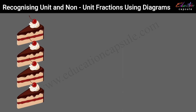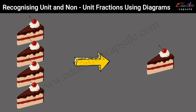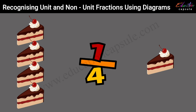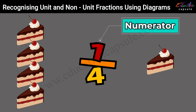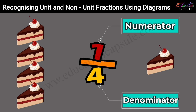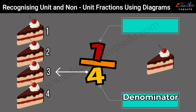For example, out of four pieces of a cake you get one piece. So the fraction you have is one quarter, that is one out of four. The top part of the fraction is called the numerator — it shows the number of parts that you have. The bottom part of the fraction is called the denominator — it shows the total number of parts the whole is divided into.